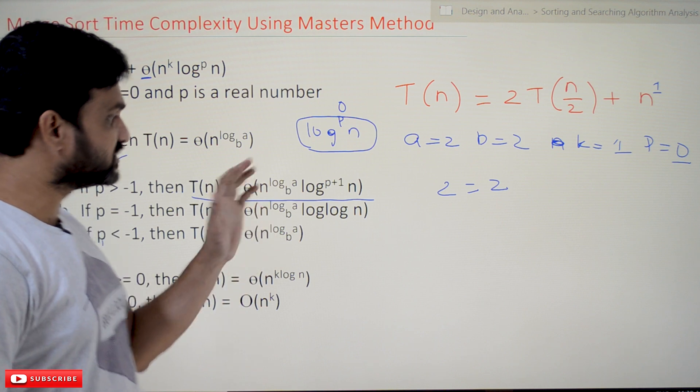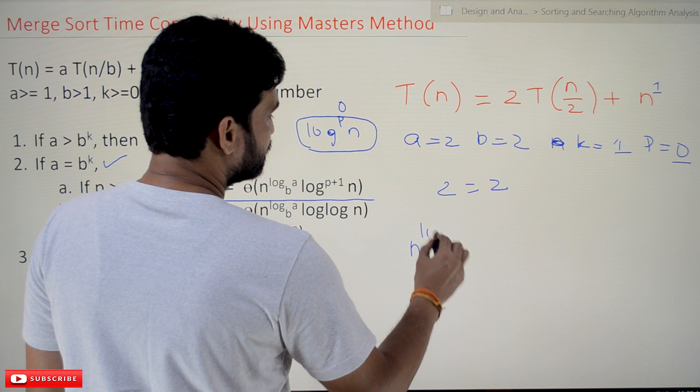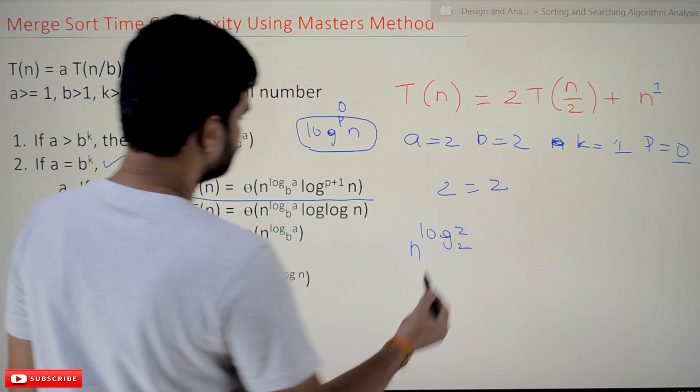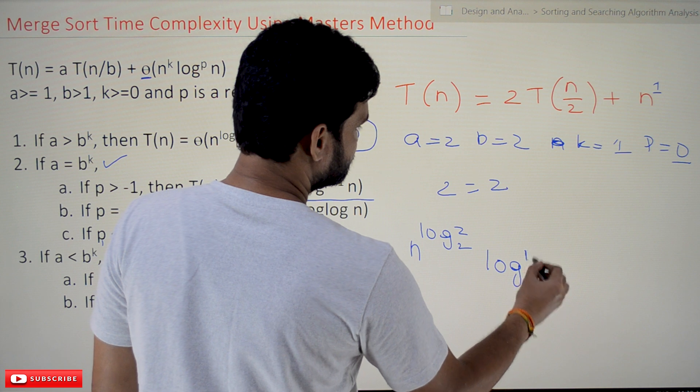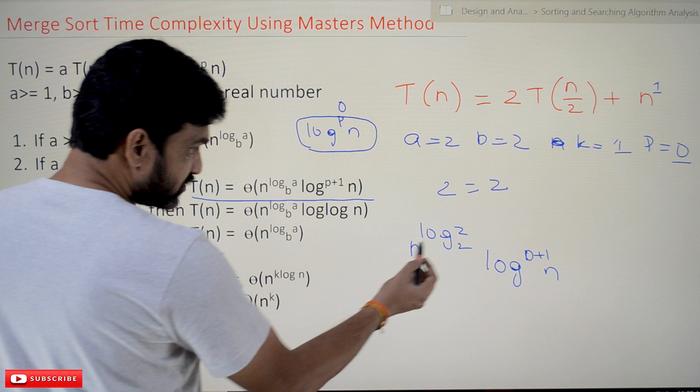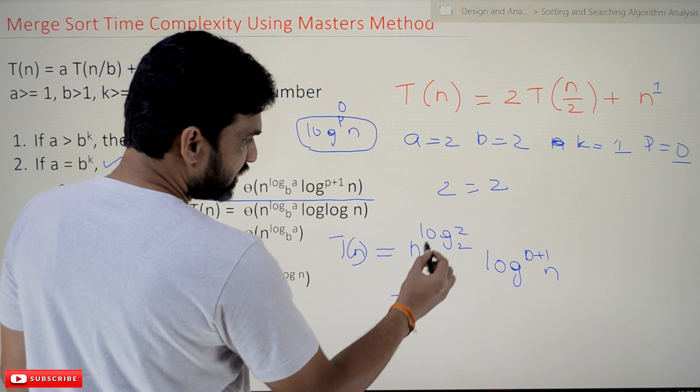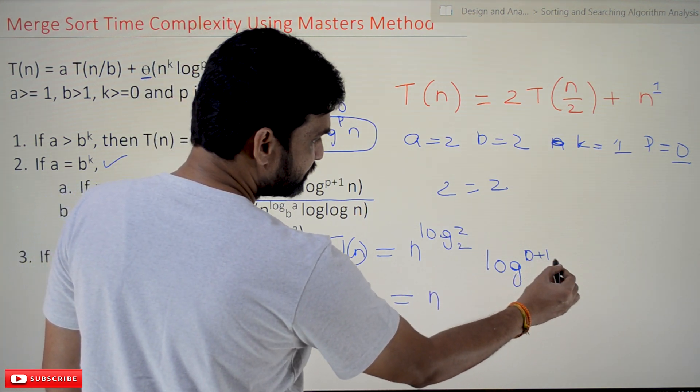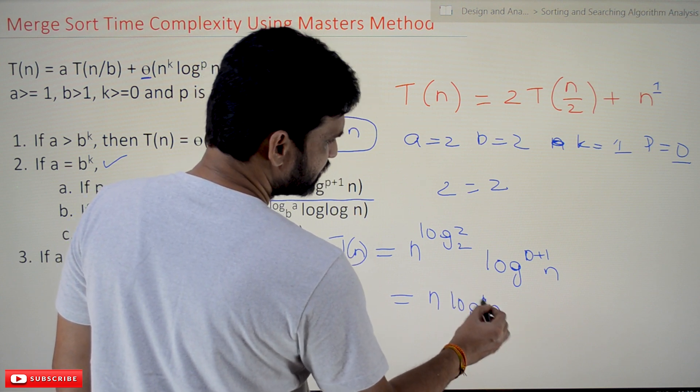Now this is the time complexity of the algorithm. Let's substitute the values of a and b in this corresponding equation and see how it is going to behave: n^(log_b(a))·log^(p+1)(n). Log 2 base 2 is 1, so n^1. Log^(0+1) is log^1(n), which is just log(n). So if you solve this, T(n) is equal to n·log(n).